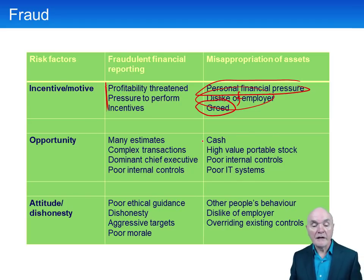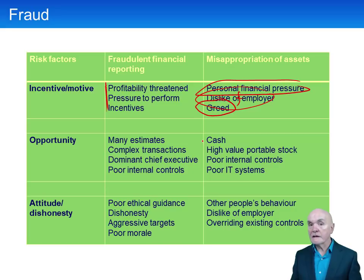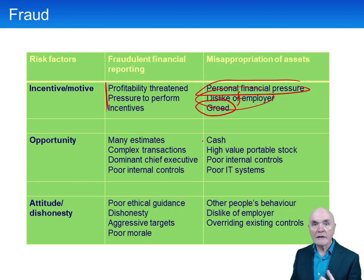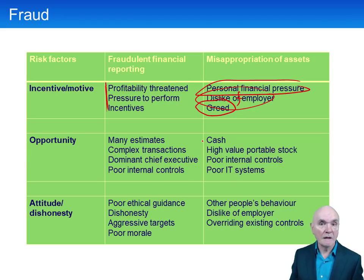At the higher level of fraudulent financial reporting, if there are many estimates, it gives directors leeway to perhaps overstate profits by understating provisions. Complex transactions that auditors and other members of the management team don't properly understand. A very dominant chief executive is an important one — a lot of corporate governance is to try to reduce the power of a dominant bullying chief executive who may say simply give me petty cash or write me this money for expenses without producing proper documentation, and can get away with it really.